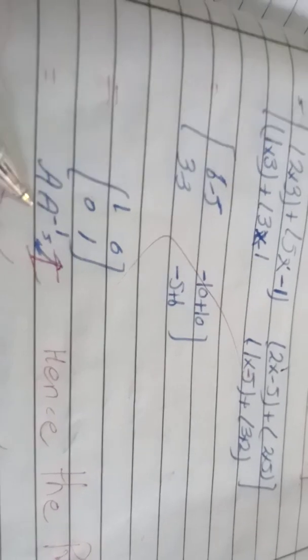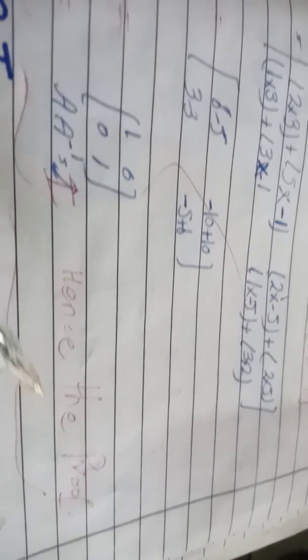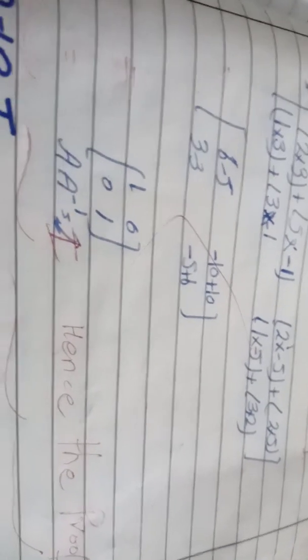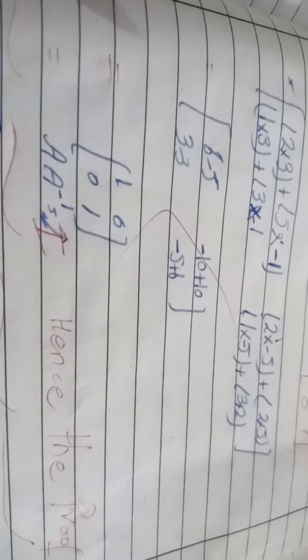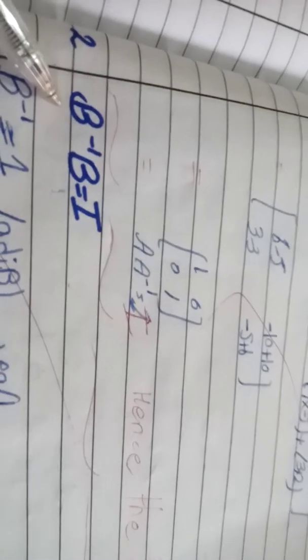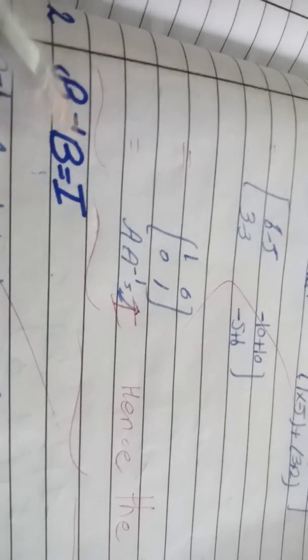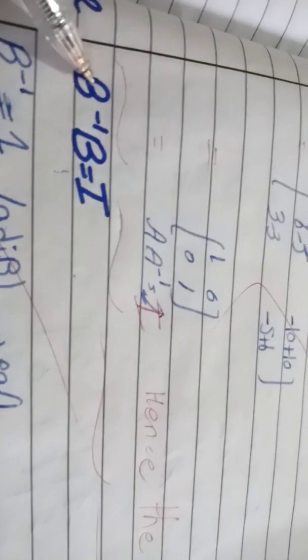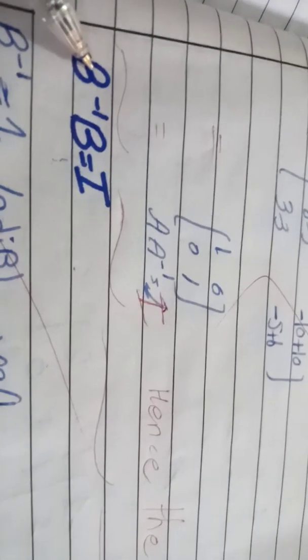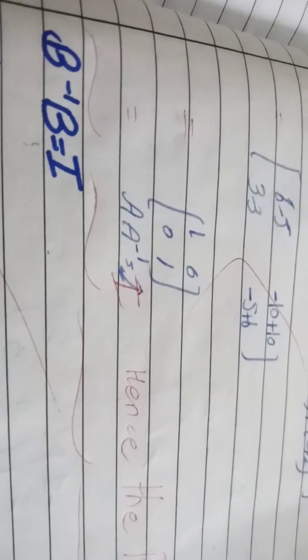Hence the product of matrix A and its multiplicative inverse equals I, which is the required result — this is what we wished to prove. Similarly for the next part: matrix B times the multiplicative inverse of matrix B equals the identity matrix. We are given matrix B, and you have to calculate its multiplicative inverse as we did in the previous part. See you in the next lecture.